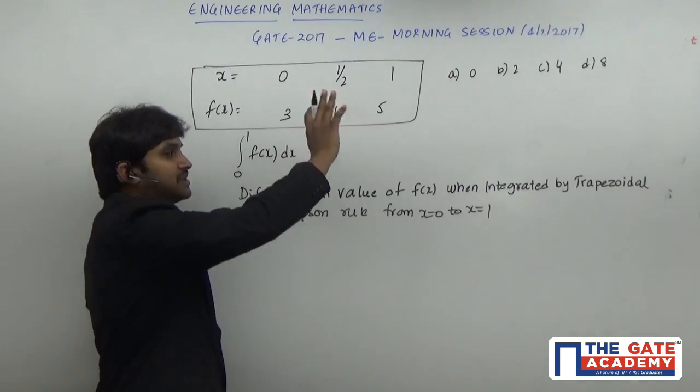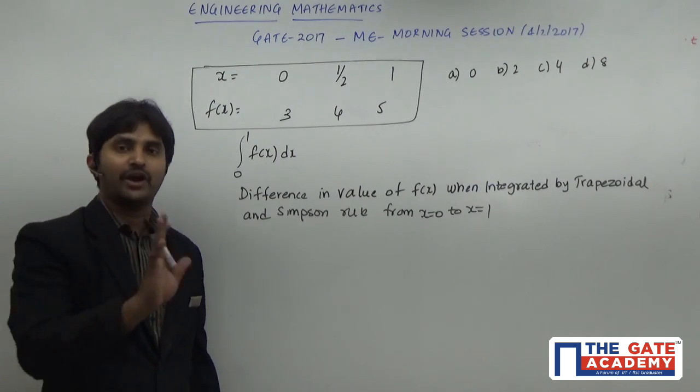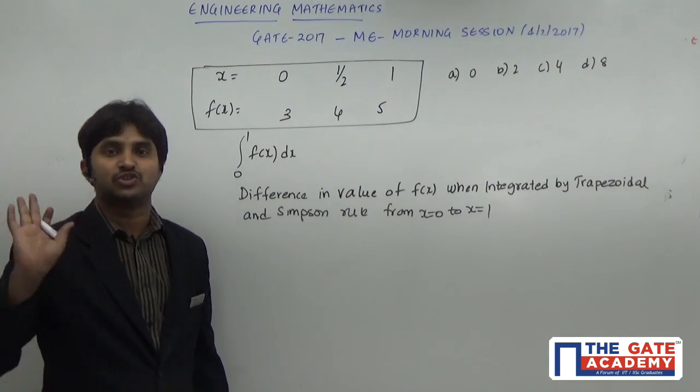So generally we are going to use the Simpson's 1/3 rule for Simpson's method and trapezoidal method. Here it is not required even to calculate the values. We can directly say the answer using the shortcut.